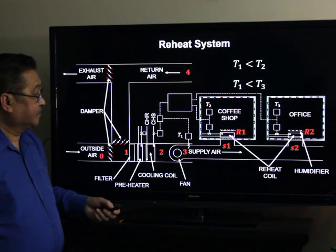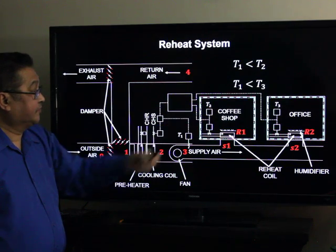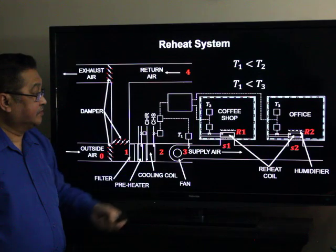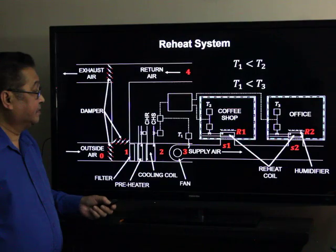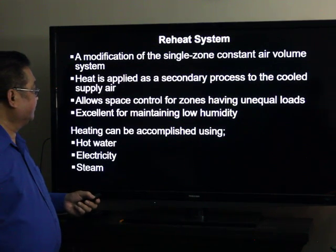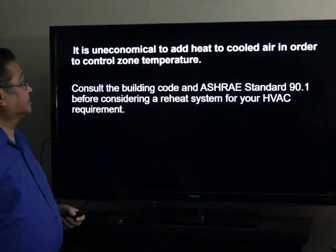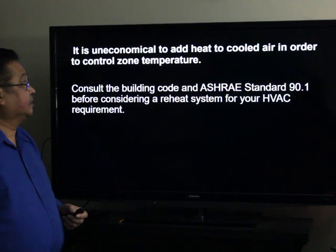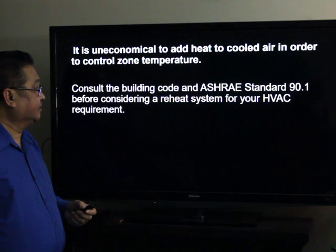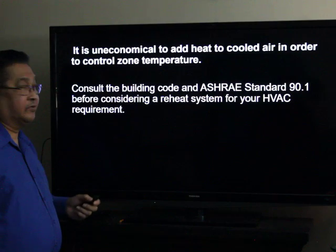With the reheat system, you have a reheater for each zone. In cases where the supply air temperature is lower than the temperature set point for both the coffee shop and the office — T1 is less than T2 and T1 is also less than T3 — you can use the reheat coil to raise the temperature when it is too cold. Heat is applied as a secondary process, and the heating can be accomplished using hot water, electricity, or steam. It is highly economical to add heat to cold air in order to control zone temperature. You should consult the building code and ASHRAE Standard 90.1 when considering a reheat system for your HVAC requirement.